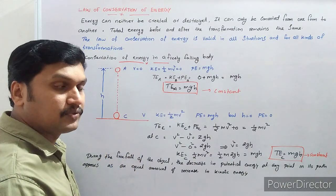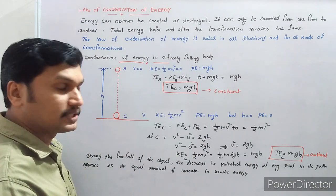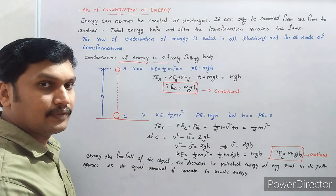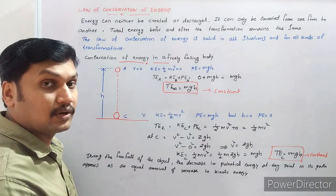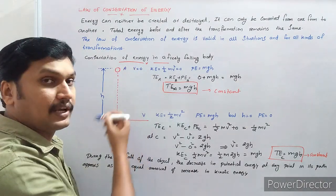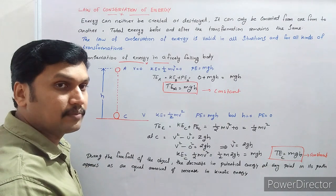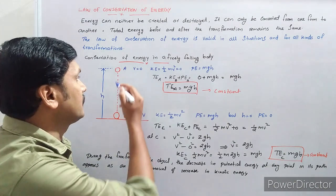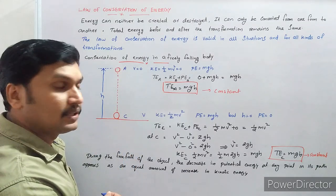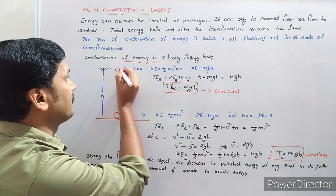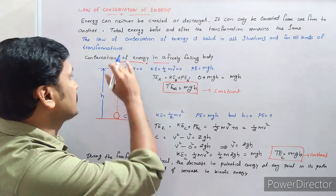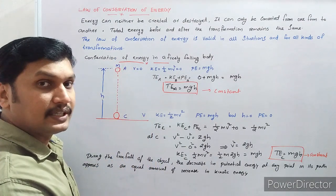Let us see a simple example for the law of conservation of energy: conservation of energy in a freely falling body. We know that once a body is falling under gravitational force alone, we call it a freely falling body. Consider such a free fall — from a height h above the earth's surface, we are dropping a body of mass m. This body of mass m is at a height h above the earth's surface.